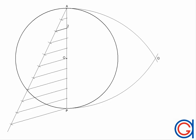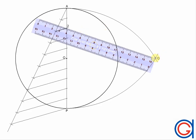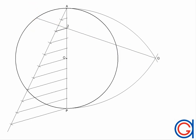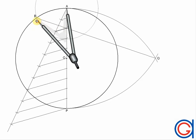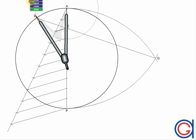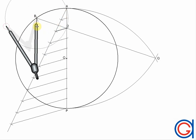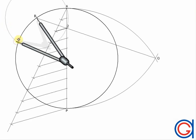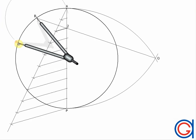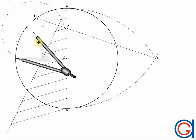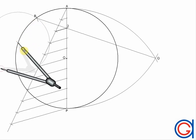The next step is to draw a line from point Q to point 2 and continue to point B on the circle as shown. So we have an arc AB, and this is the measurement of one side of the decagon we are looking for. This arc AB should fit exactly 10 times into the circumference of the circle, if we have drawn everything precisely up to this point.